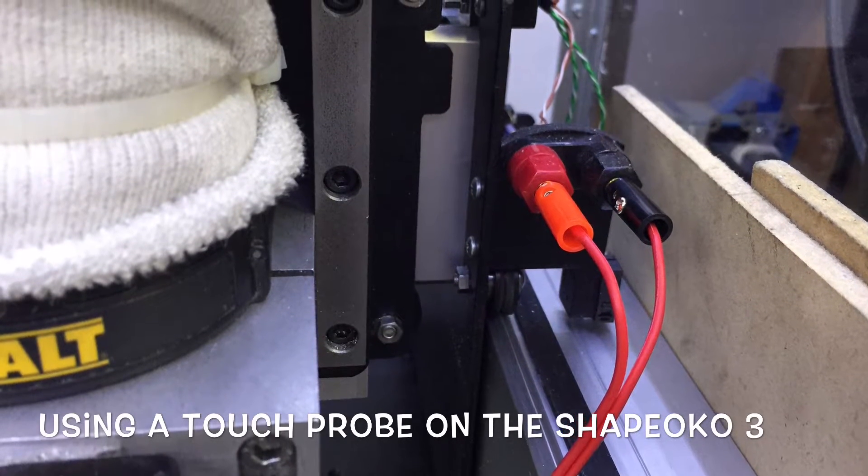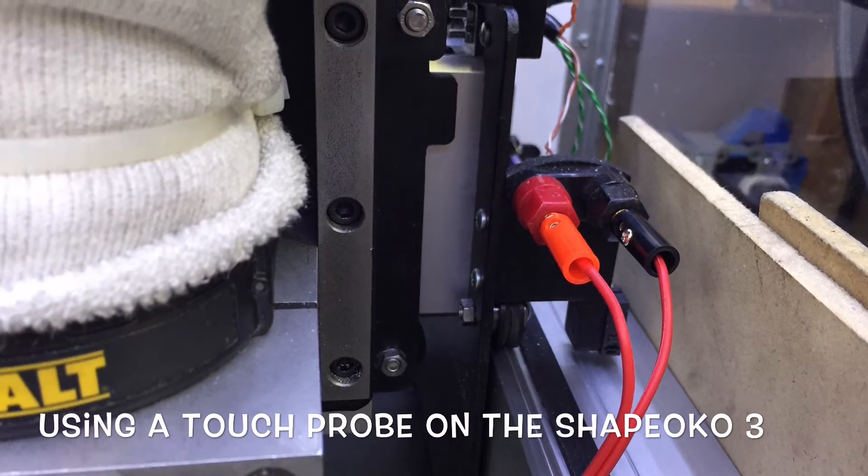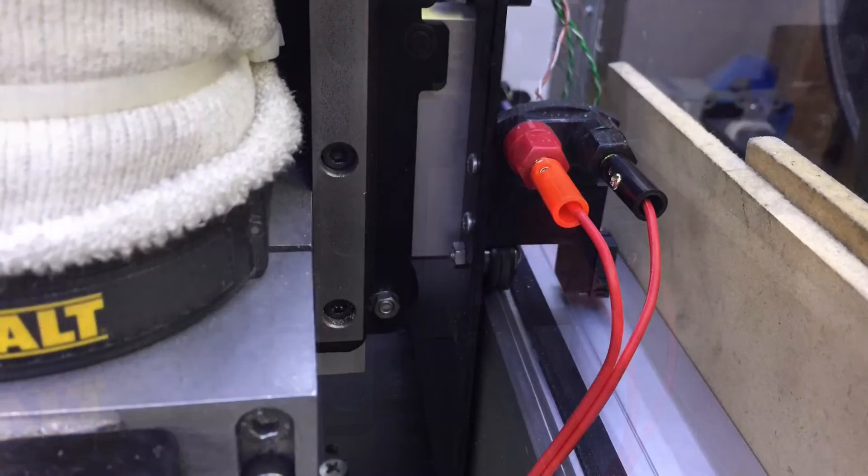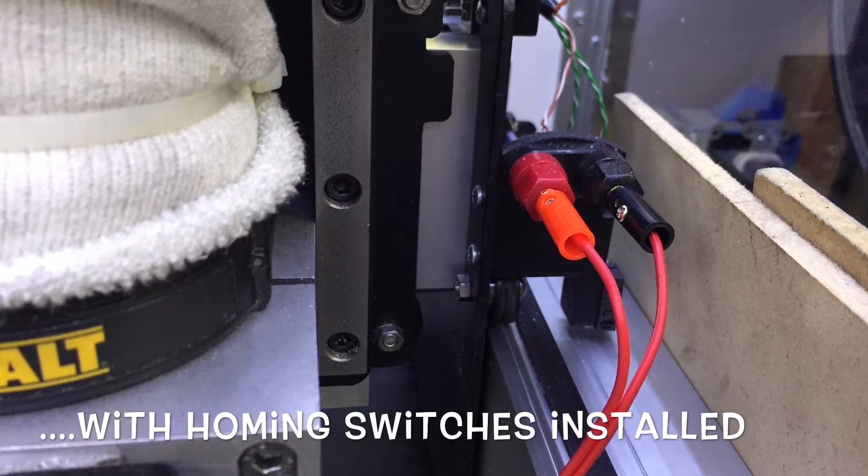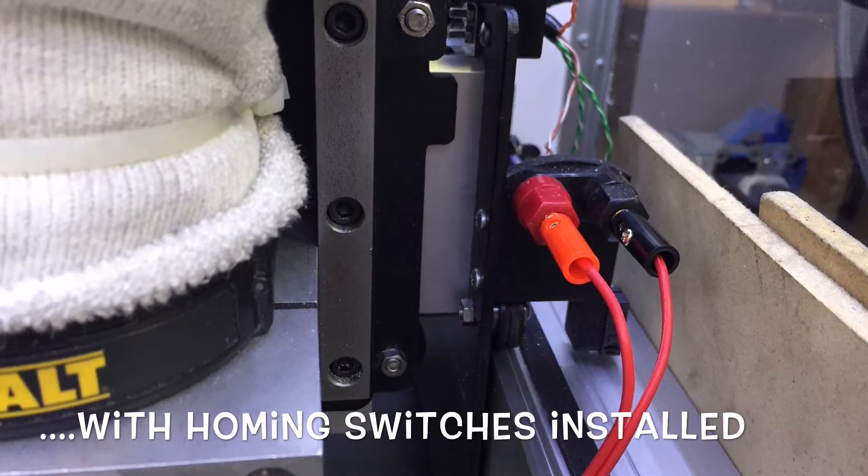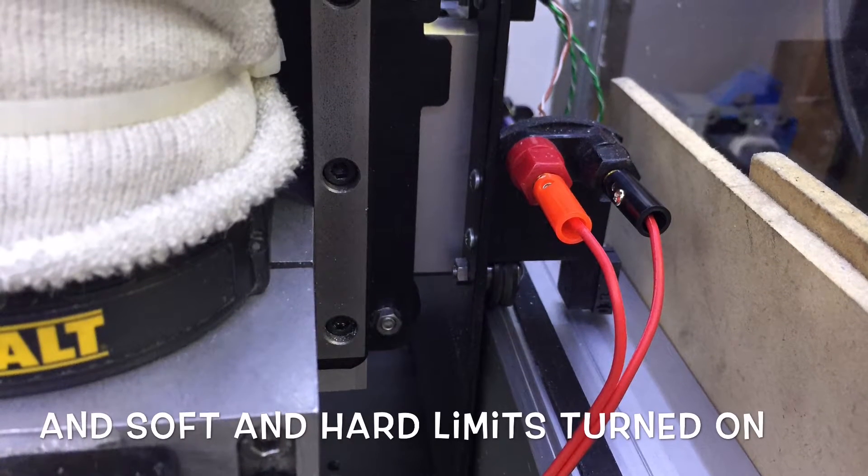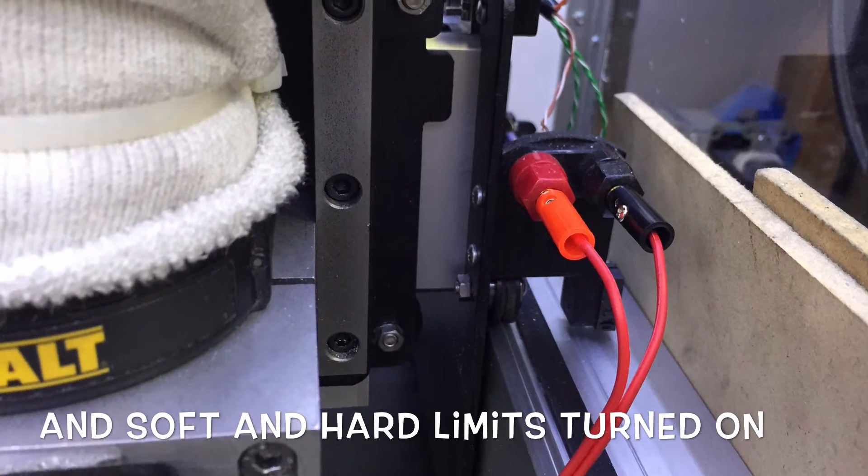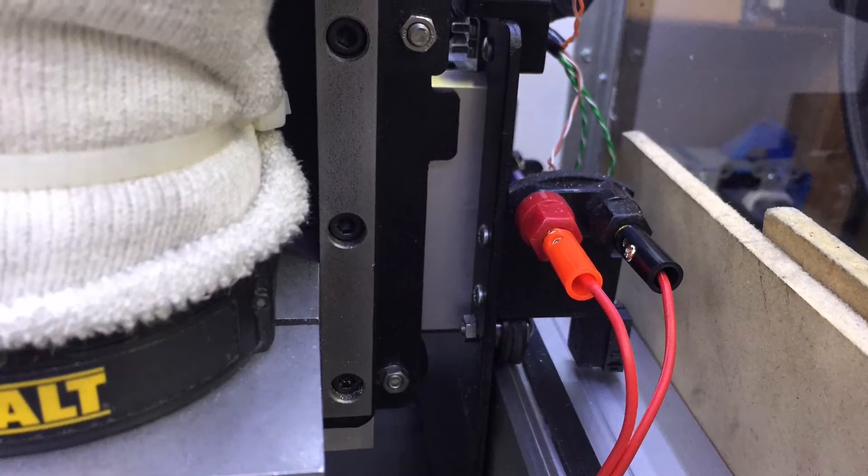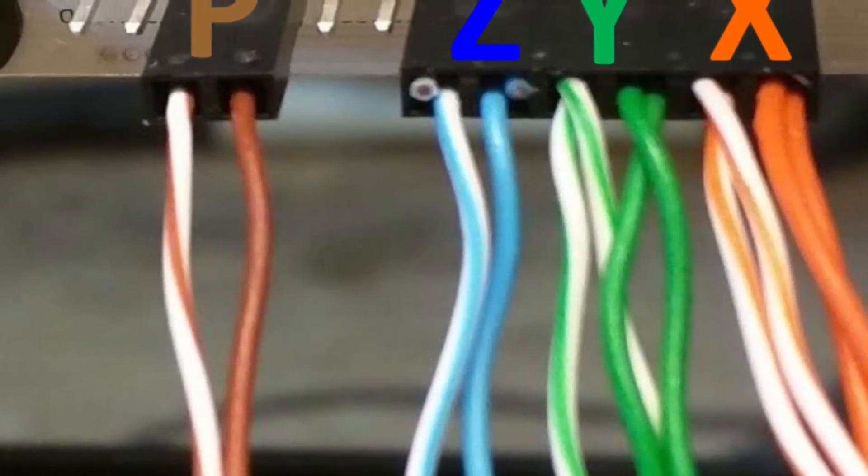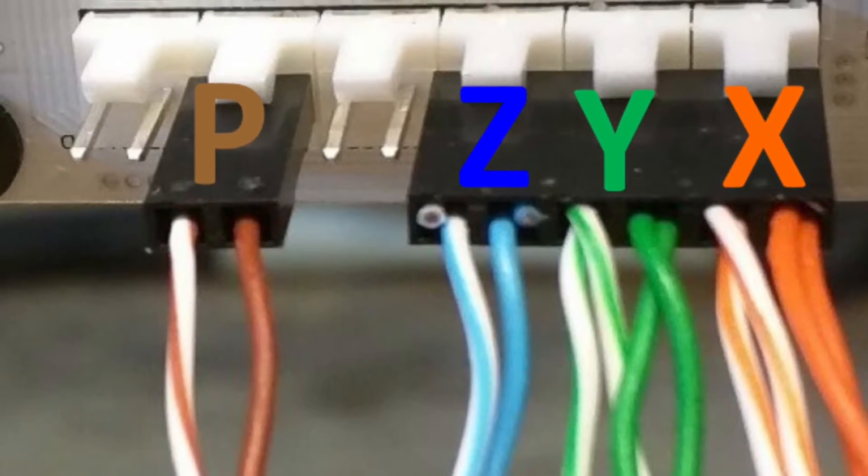Several of my viewers have asked for a video on probing, so here it is. I have one of the first metal tables out there, so it was a little confusing on what needed to be grounded. You can learn from me, stop struggling and move forward. Probing is one of the best things you can do on your machine. Thankfully, the electronics are already included with the probing capability.